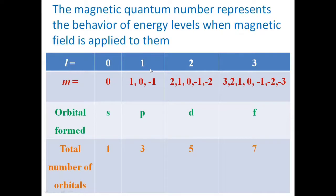If L is equal to 1, then the value of M is 1, 0, and minus 1. The orbital form is the P-orbital and the total number of orbitals is 3: Px, Py, and Pz.